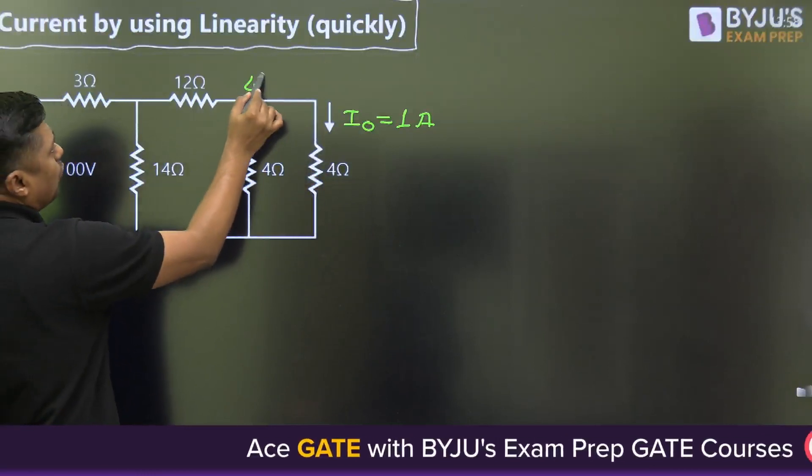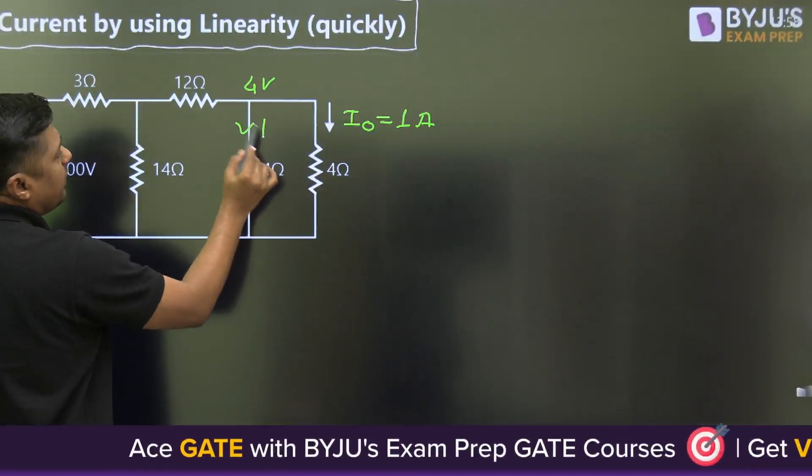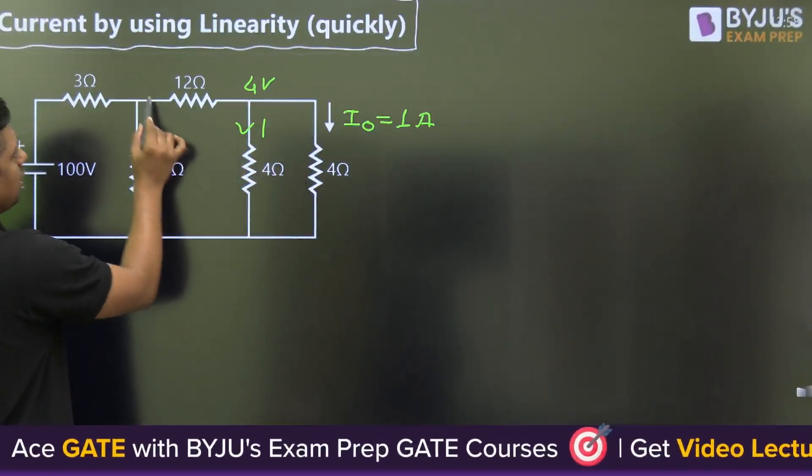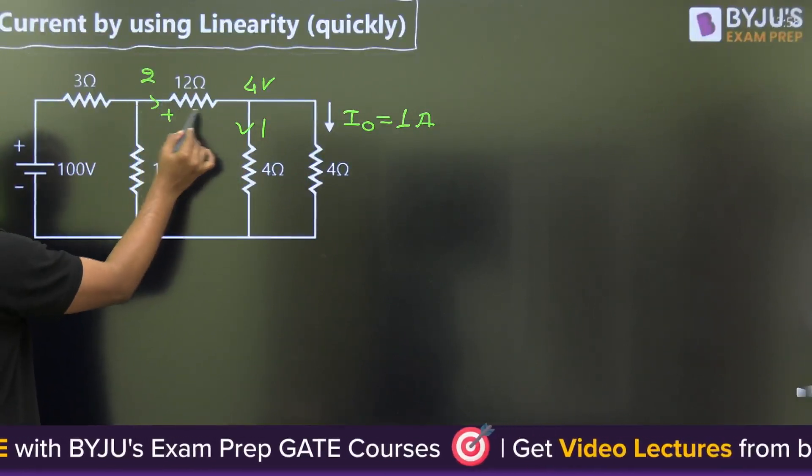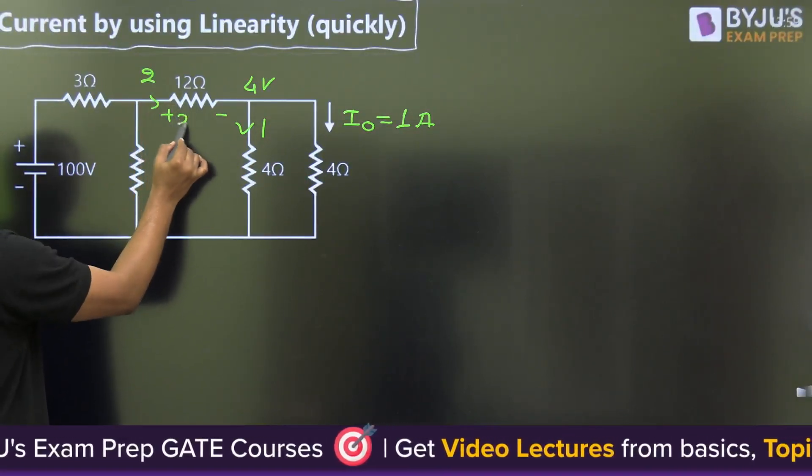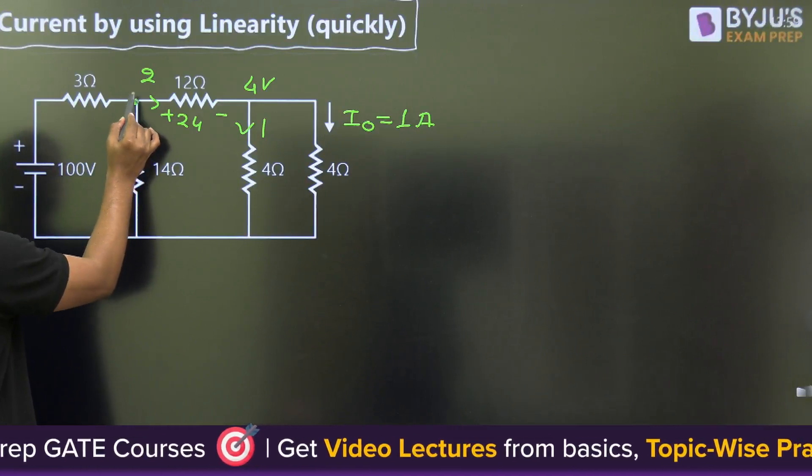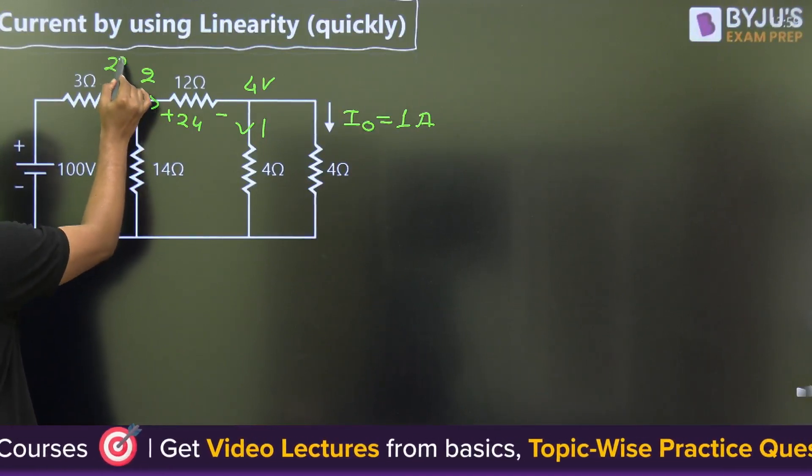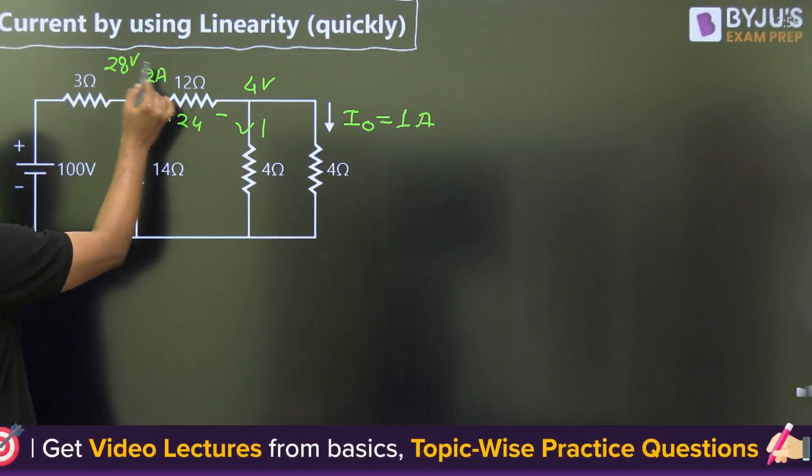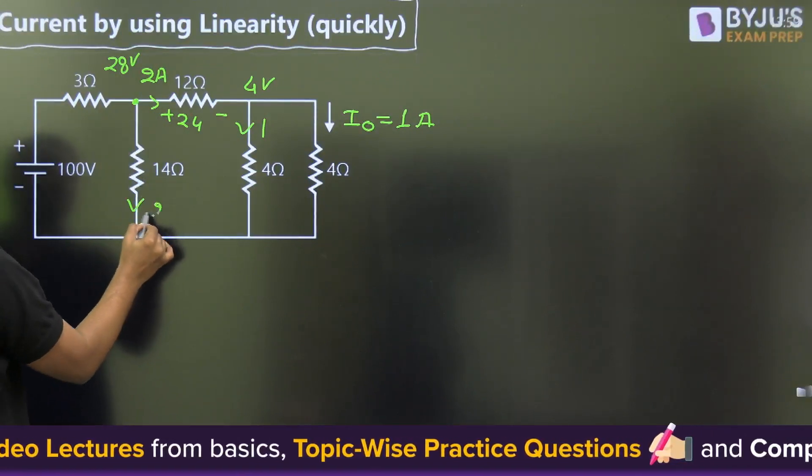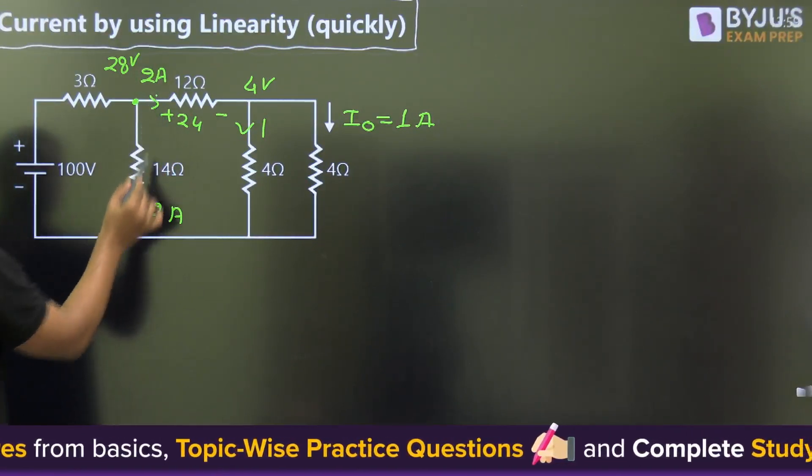4 times 1 is 4 volts. What is the current here? Again 1 ampere. 4 by 4 is 1 plus 1, the current here is 2. So the drop is 2 times 12 equals 24. The voltage at this point is 28 volts. 28 divided by 14 is 2 amperes.